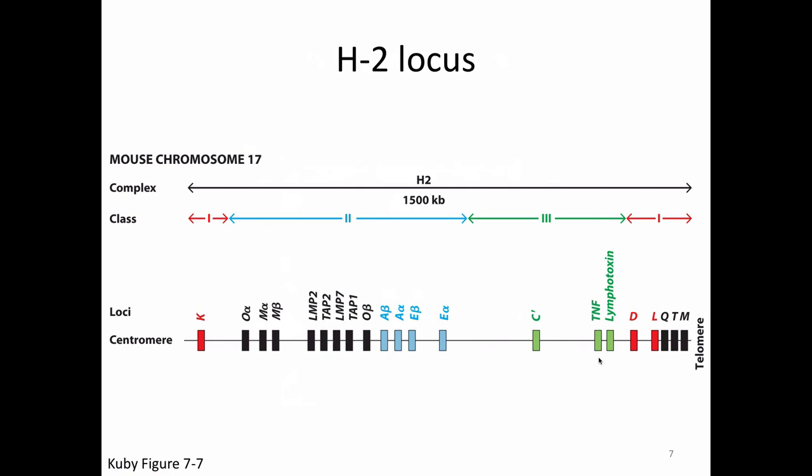You'll notice class 1s still have one letter and class 2s still have two letters. We might forget to write H2 in front of K sometimes and just write K, but remembering to include it reminds you it's mouse MHC. I'm belaboring this because I will use the correct nomenclature on exam and practice questions, so you need to be able to handle it.